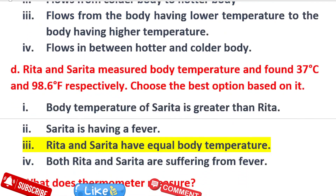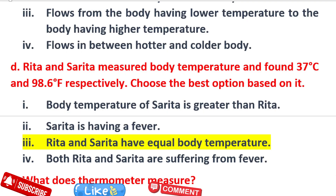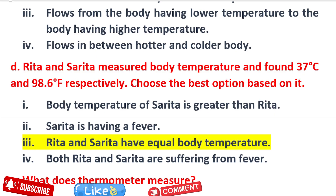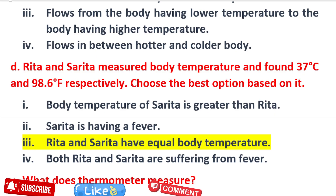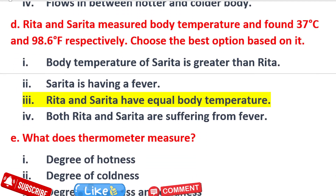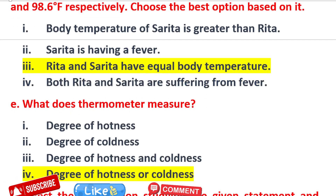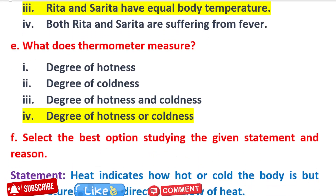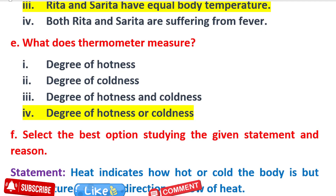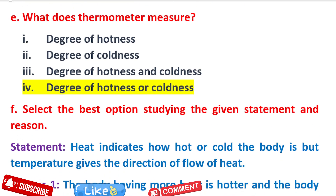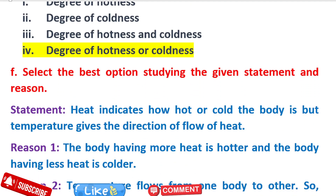Rita and Sarita measured body temperature and found 37 degrees centigrade and 98.6 degrees Fahrenheit respectively. Choose the best option based on it. What does the thermometer measure? The answer is: the degree of hotness or coldness.